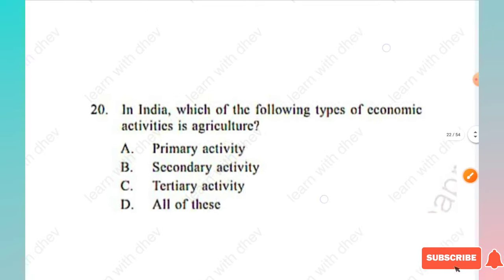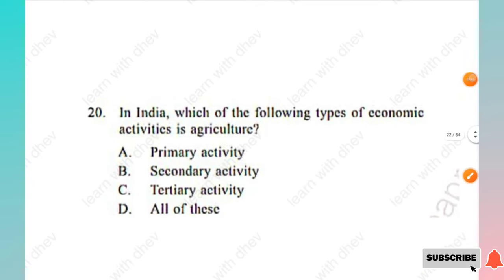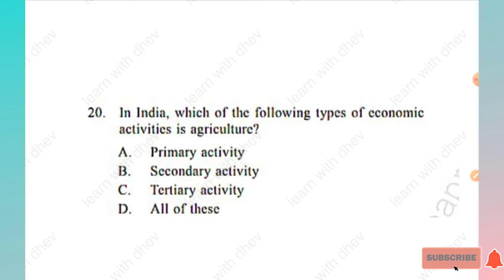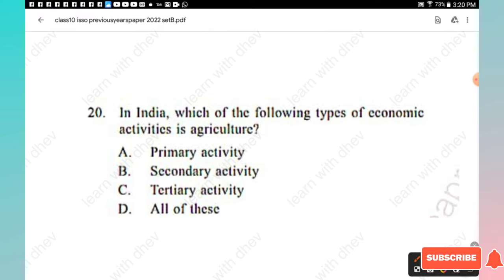Question 20: In India, which of the following types of economic activities is agriculture? Options: primary activity, secondary activity, tertiary activity, all of these. In India, agricultural activity is a primary activity, so Option A is the right answer.